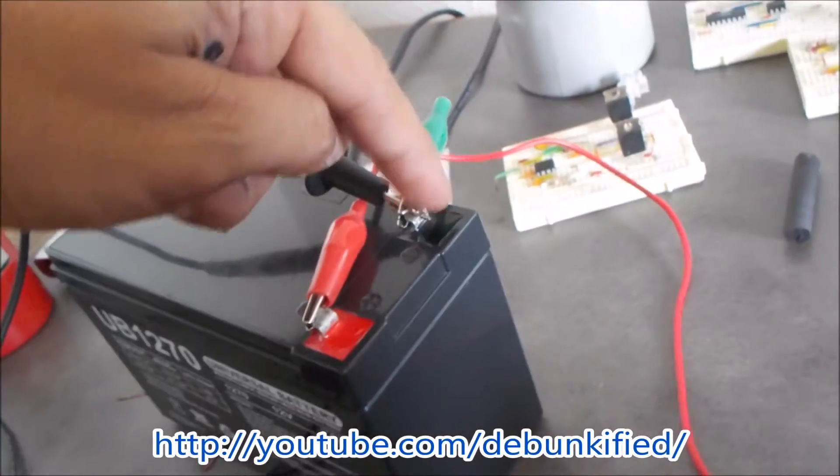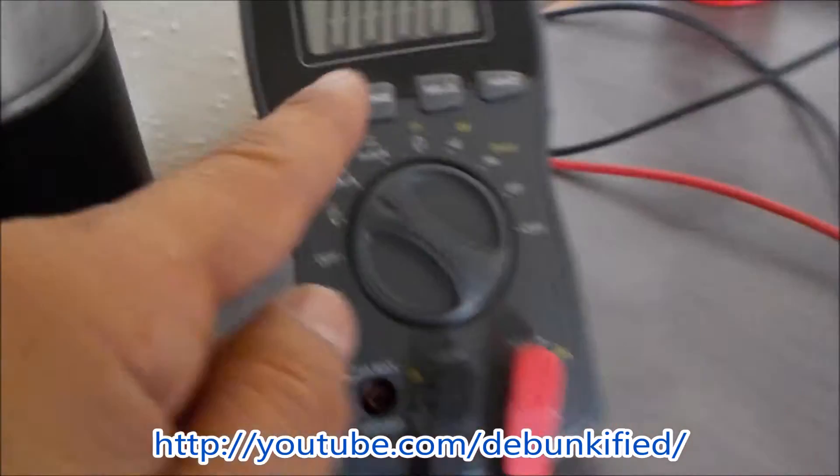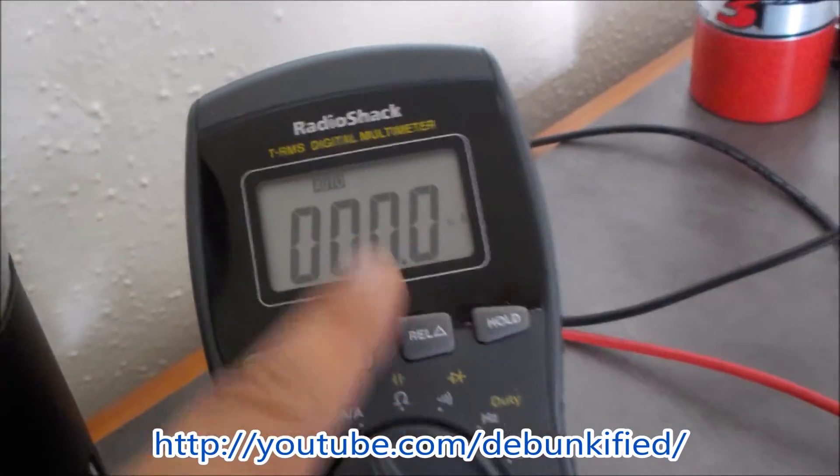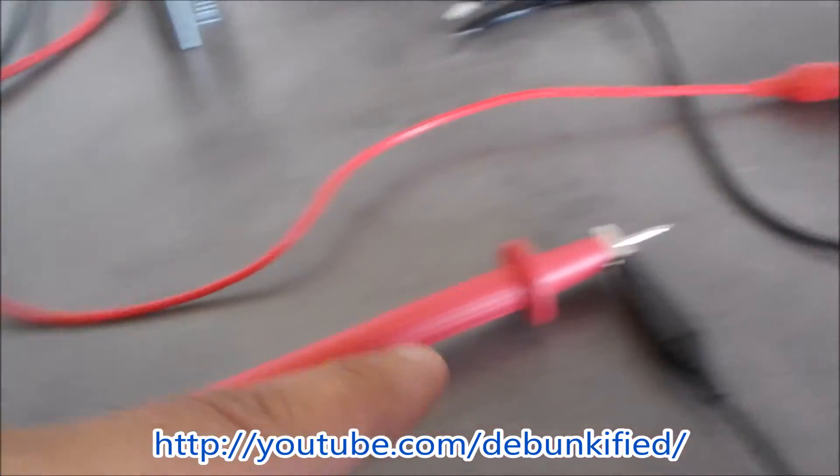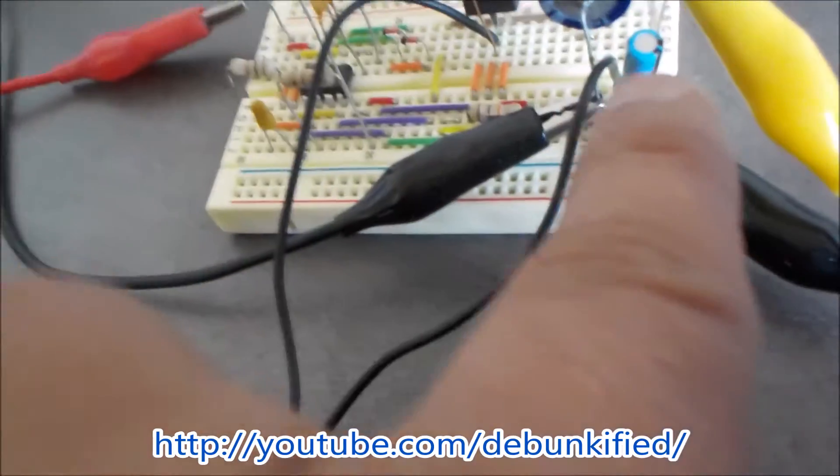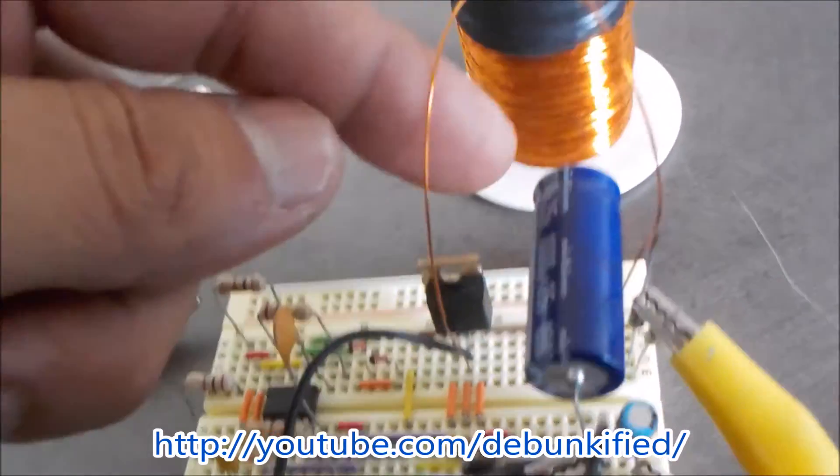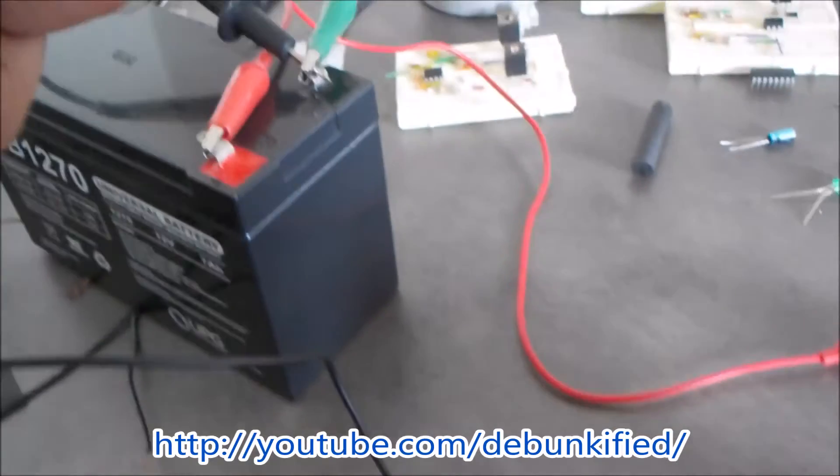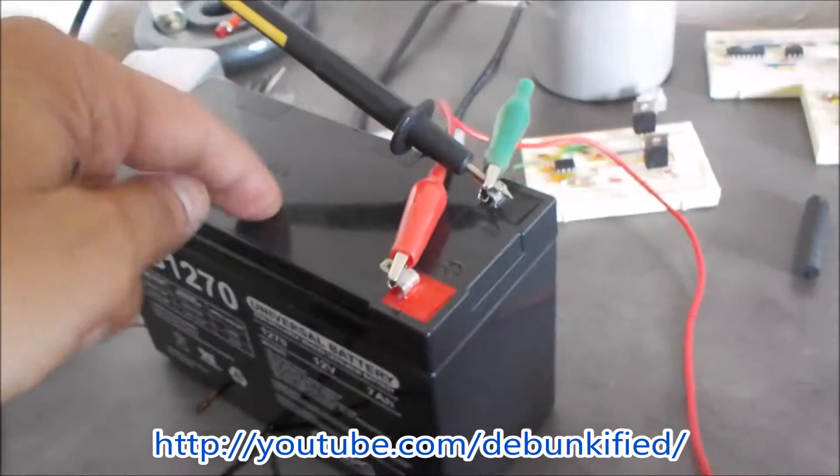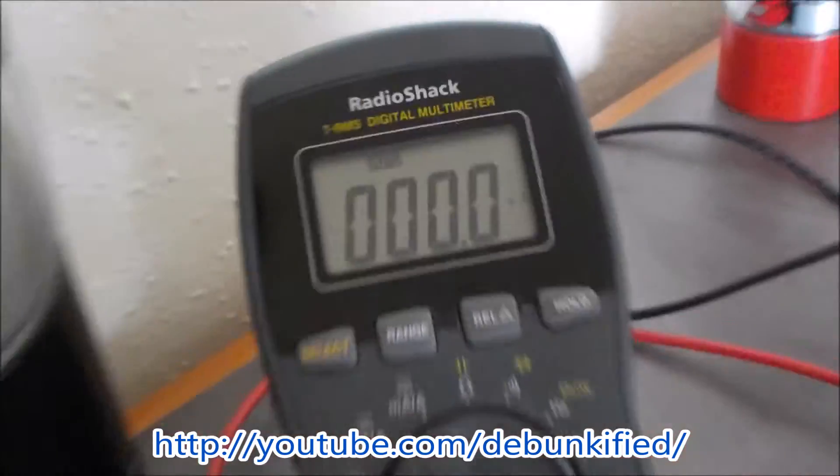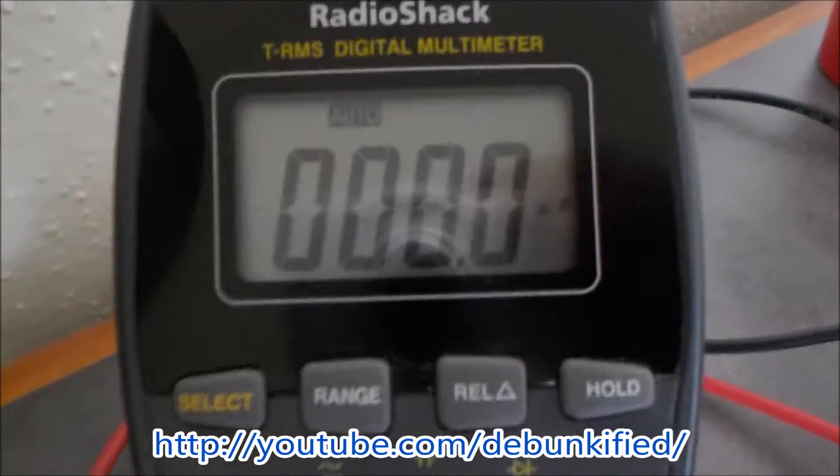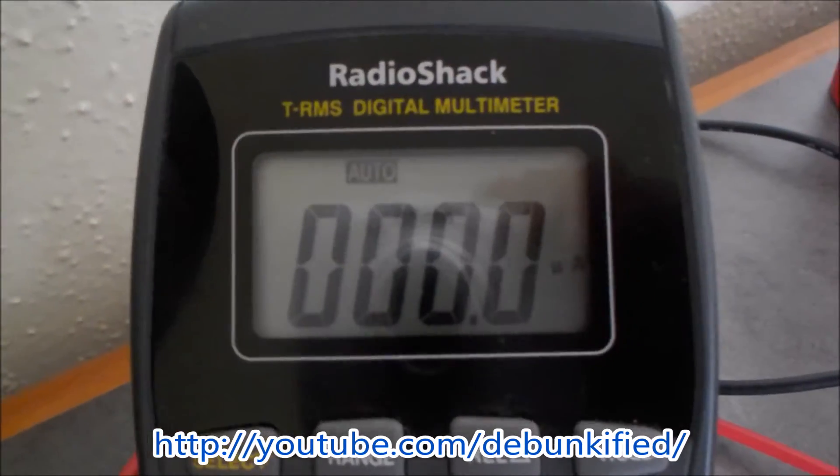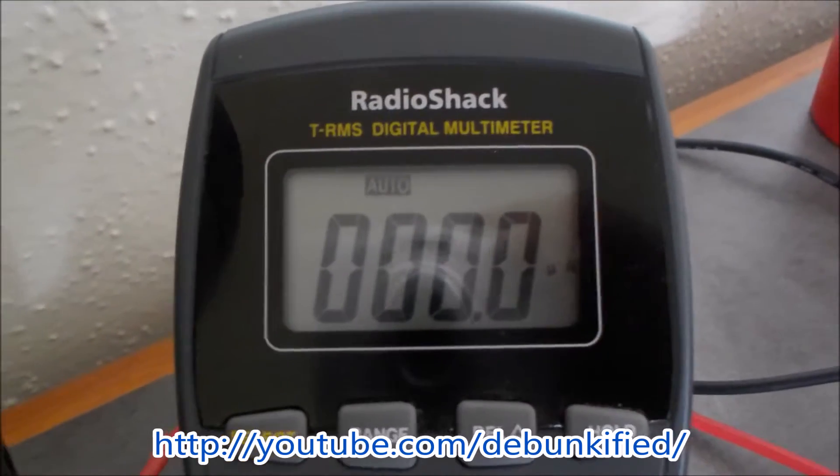On the negative side here I have the meter on the microamp range. The other side of the meter goes to one side of this capacitor, then through the switch, through the coil, and back to the positive of our power source. I'm reading no current when I turn this on, not even a microamp of current.